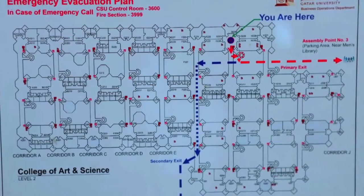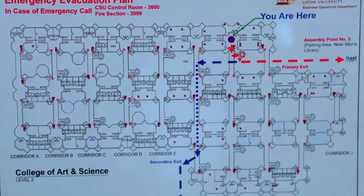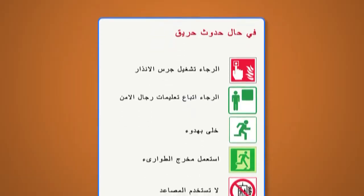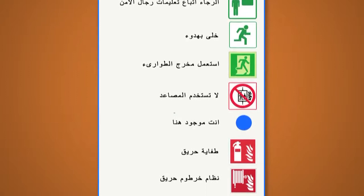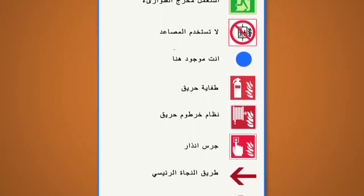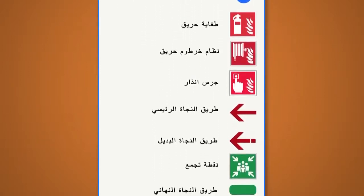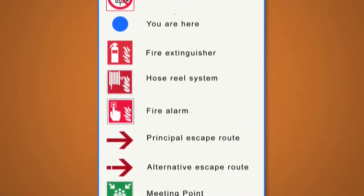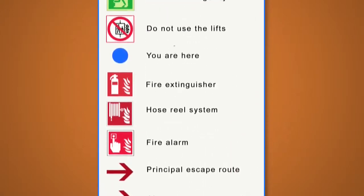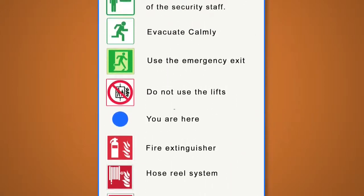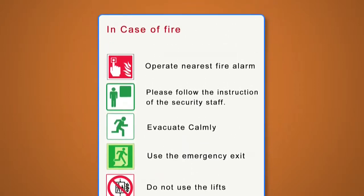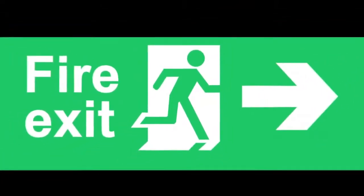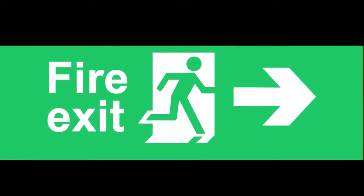Familiarise yourself with the building evacuation plan. Evacuation plan signs are normally located at stairwells and elevator lobbies. These signs identify exit paths, stairwells and fire extinguishers. In the event that the building should fill with smoke, exit signs may be your only visible way to finding an exit.